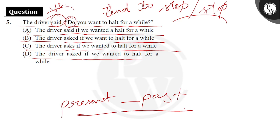Then we will apply the correct answer. We will see that is option D. That is option D. The driver asked if we wanted to halt for a while. Because it is a question here, then we will apply it. The like and dislike has not been asked.